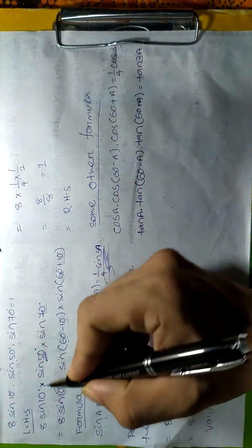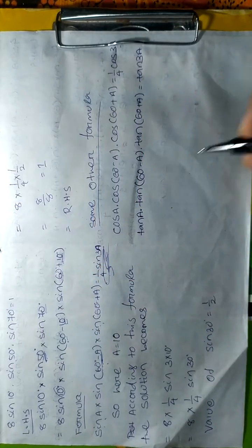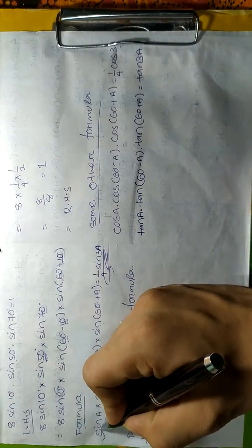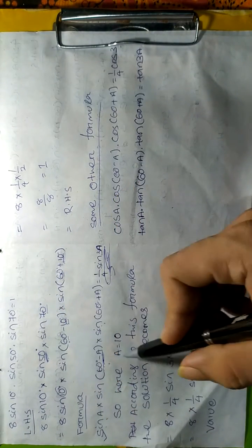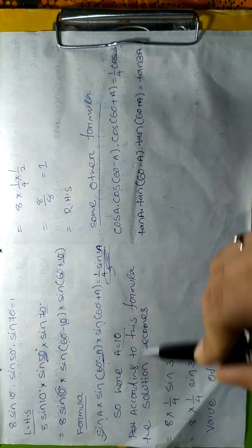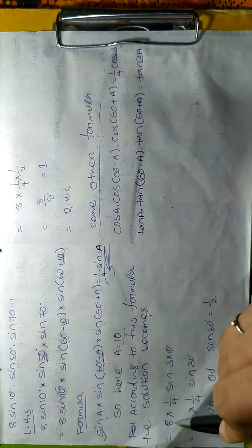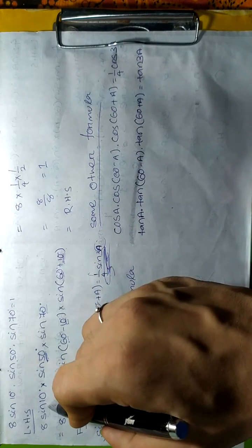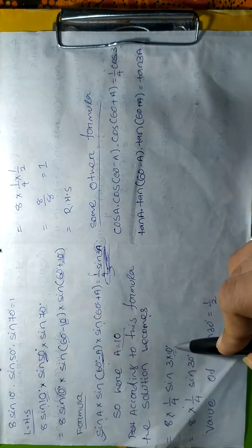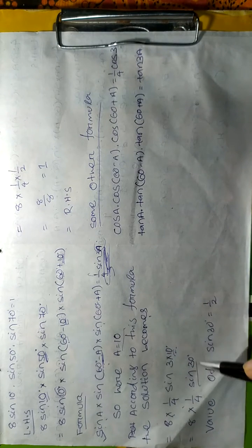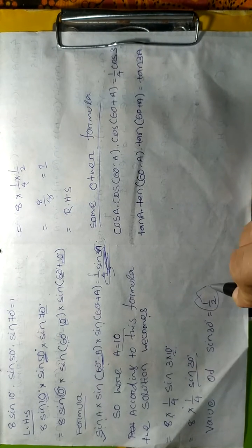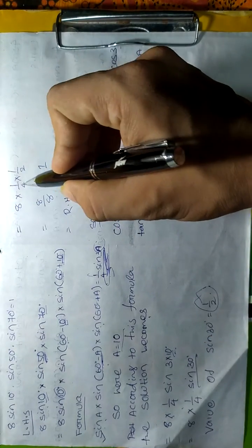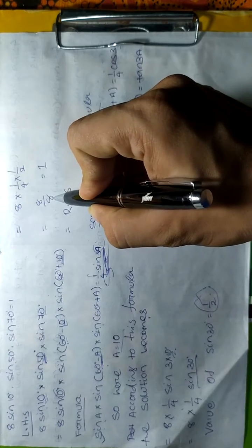The solution becomes sin(10°) · (1/4)sin(3a). Instead of 'a' we put our value, which is 10°. Now the value of sin(30°) is 1/2, so putting this value in this solution we get sin(10°) · (1/4) · (1/2) = sin(10°) · 1/8. Therefore, 8 · sin(10°) · sin(50°) · sin(70°) = 8 · 1/8 = 1.